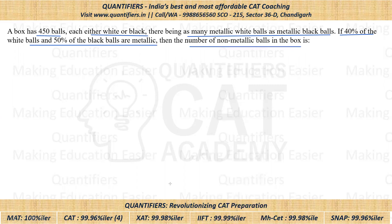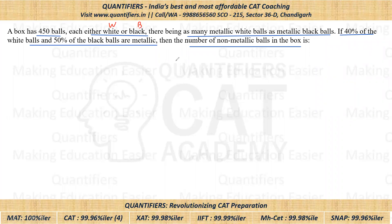Let's assume the total number of white balls to be W and total number of black balls to be B. Metallic white balls are 40% of W. Metallic black balls are 50% of B, and they are equal to each other.